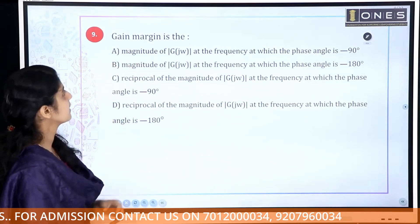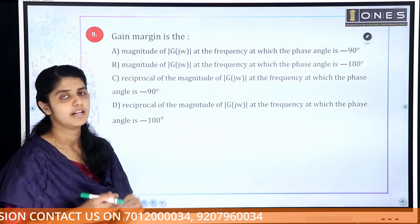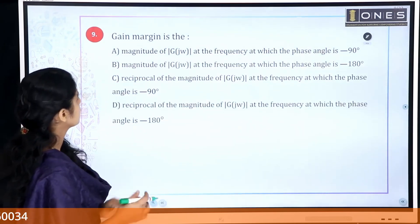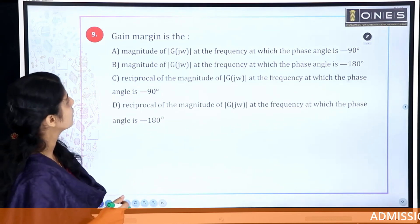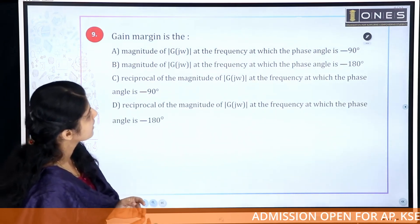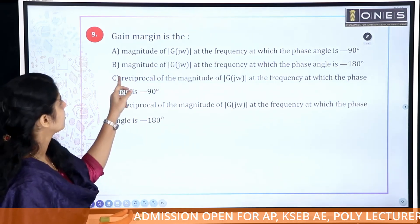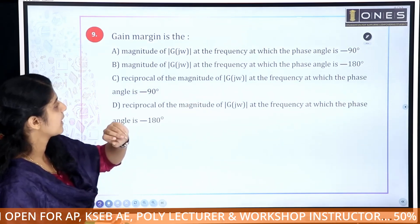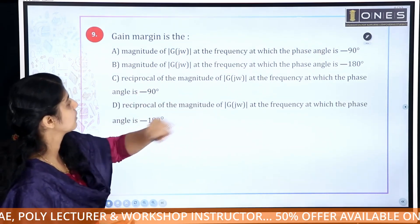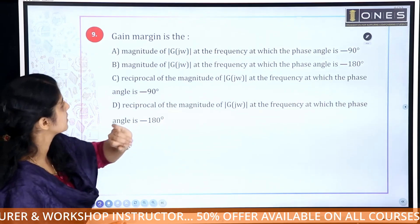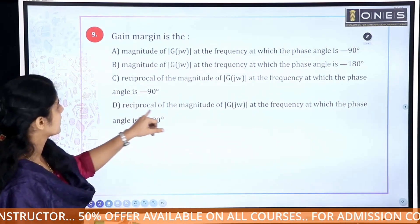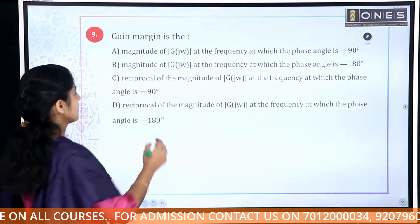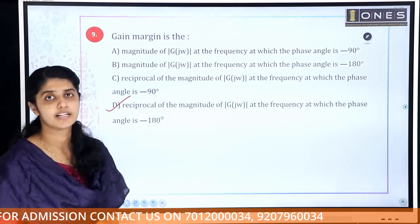Next question — again control system: what is the gain margin? The options are: magnitude of G(jω) at the frequency at which the phase angle is −90°; magnitude of G(jω) at the frequency at which the phase angle is −180°; reciprocal of magnitude of G(jω) at −90°; or reciprocal of magnitude of G(jω) at −180°. Option D is the correct answer.